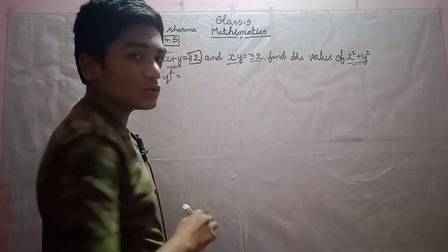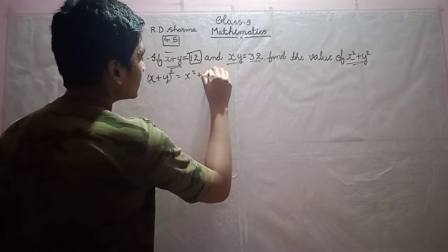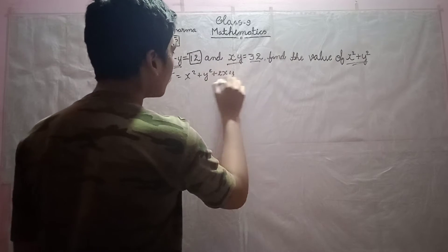So, what is x plus y whole square? Yes, it is x square plus y square plus 2xy. It is a very important identity.